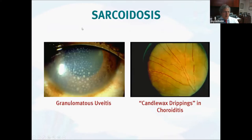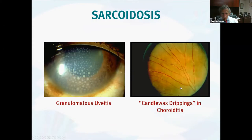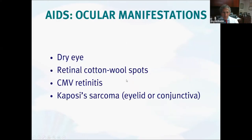Sarcoidosis — the two main things we can see in the eye are a classic granulomatous uveitis, and with granulomatous uveitis, in addition to cells in the anterior chamber, you can see deposits of white cells on the inner layer of the cornea, as well as so-called candle wax drippings in the choroid — scattered little white droppings throughout the retina. Those are really the two classic findings we see in sarcoid.